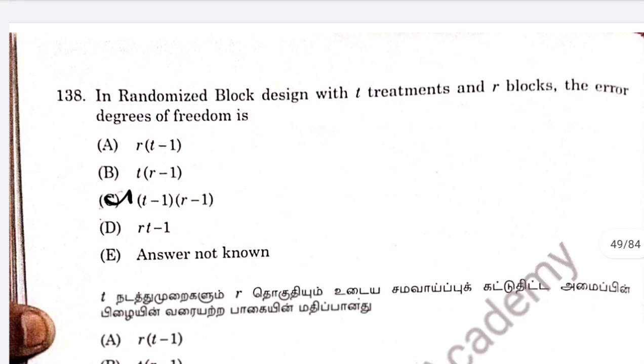Question 138: in a randomized block design with t treatments and r blocks, the error degrees of freedom are t minus 1 times r minus 1.